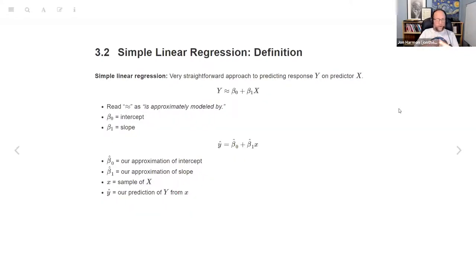We'll start by defining what is this linear regression. It's a very straightforward approach to predict Y from X, so it's saying Y is approximately beta zero plus beta one times X. The squiggly equals approximately sign should be read as is approximately modeled by. I really appreciate when anything tells you how to read a symbol because it keeps you from just glossing over the math. Beta zero is the intercept, beta one is the slope.